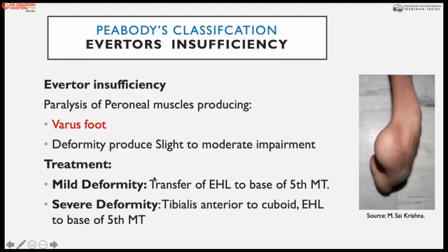For mild or slight equinovarus deformity from inverter insufficiency, extensor hallucis longus is transferred to the base of the fifth metatarsal — in contrast to the first metatarsal used for the opposite deformity — to compensate for lateral or evertor insufficiency.